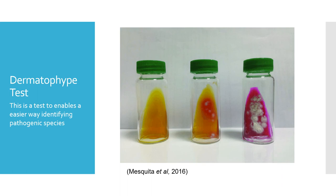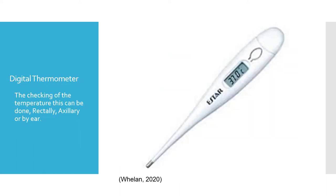Dermatophyte tests are one of the easiest ways to identify pathogenic species. This can be done during examination. However, the test has an ideal temperature of 20 degrees Celsius, with the color change showing in only a few days, compared to other temperatures which can result in the test taking more days than necessary.